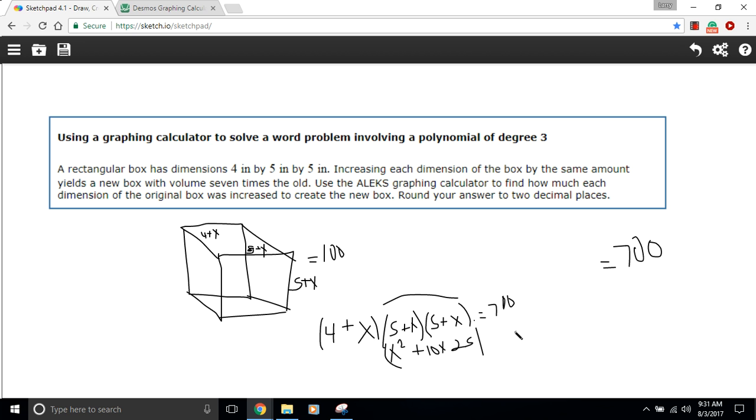I'll start with the x term. I'm going to have x cubed plus 10x squared plus 25x. And now we'll multiply it by the 4 here. So that would be 4x squared plus 40x plus 100.